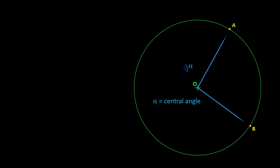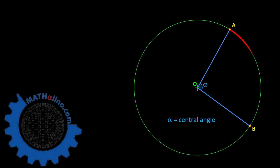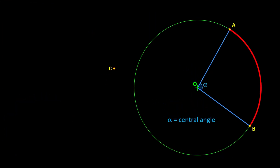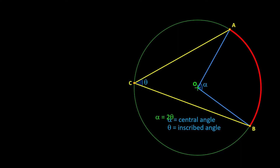The central angle Alpha intercepted the arc AB. From the circumference of the circle, the inscribed angle Theta also intercepted the arc AB. The relationship between the two: the central angle is always twice the inscribed angle.